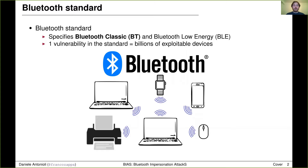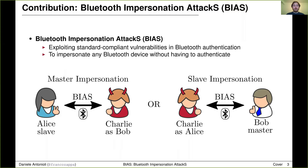One vulnerability in the Bluetooth standard enables exploiting billions of devices including phones, tablets, laptops, and cars. In our paper we present novel standard-compliant vulnerabilities affecting Bluetooth authentication and attacks capable of exploiting such vulnerabilities to impersonate any Bluetooth device without having to authenticate. We call our attacks BIAS attacks, and in the next slides we will see their design, implementation, and evaluation.